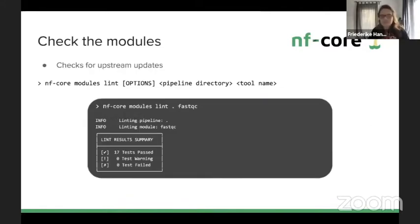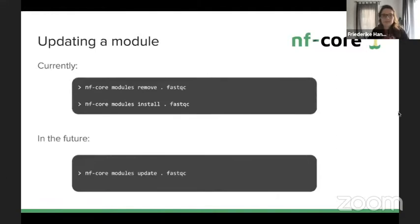Sometimes a module will get updated — maybe the software was updated and propagated to the module and you'd like to use the newest version. To check whether you have the newest version, you can run NF-core modules lint on the directory or on a specific module like FastQC, and it will check whether you've missed any changes. To update it, you currently have to remove it and then reinstall it, but Kevin is already working on creating an update subcommand.